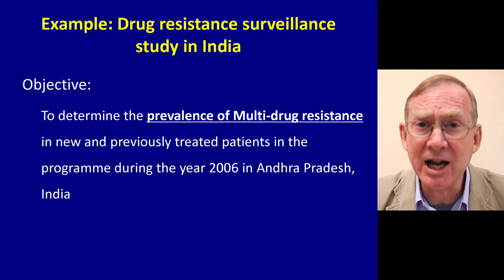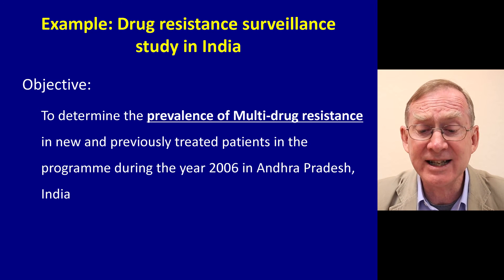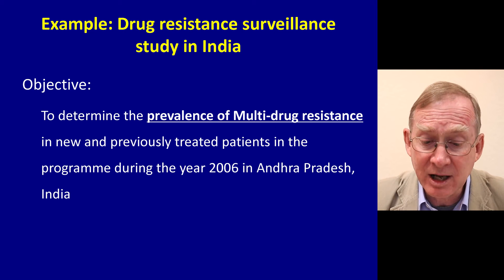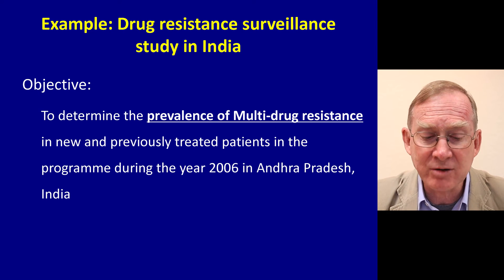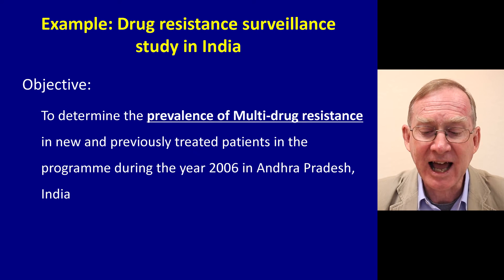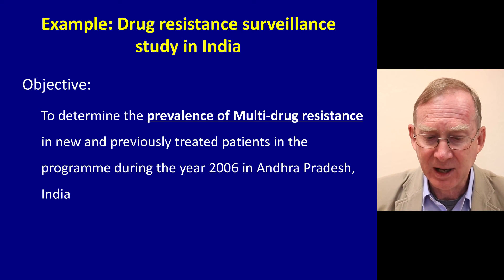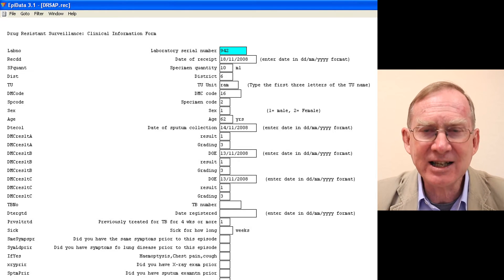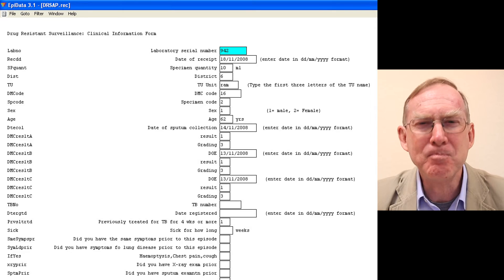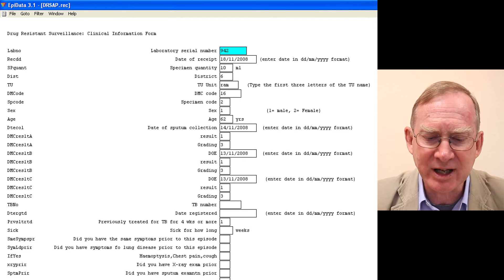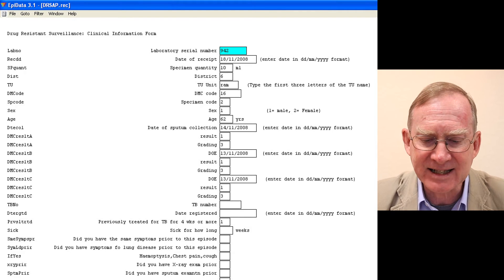I'd like to give you an example of a very nice study done by my colleagues in India looking at drug resistance. The objective was to determine the prevalence of multi-drug resistance in new and previously treated patients in the program during the year 2006 in Andhra Pradesh, India. This was their data collection form — and in fact, this data collection form collects much more data than you need. You can go through this and look at district, TB unit, sex, age.